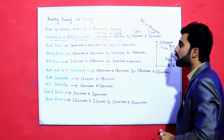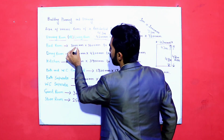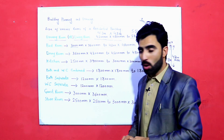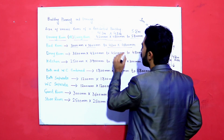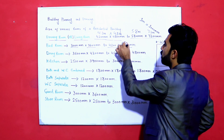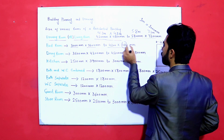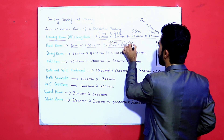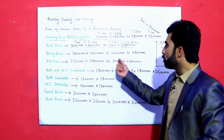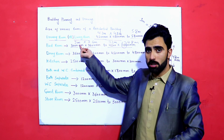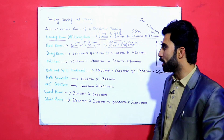For the bedroom and master room, the minimum standard size is 3000 mm by 3600 mm, which is 3.0 meters by 3.6 meters. The larger size can be 4200 mm by 4800 mm, or 4.2 meters by 4.8 meters. It should not be less than 3.0 m × 3.6 m.